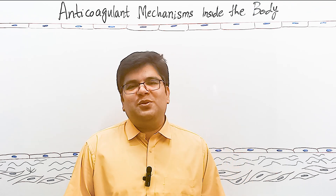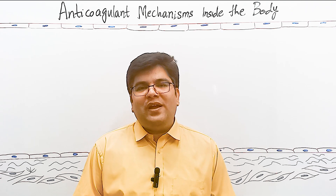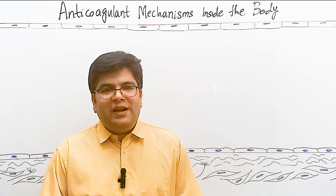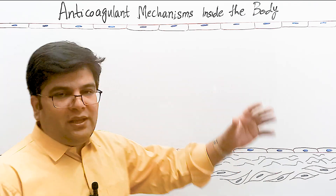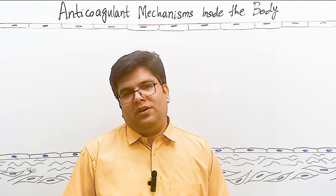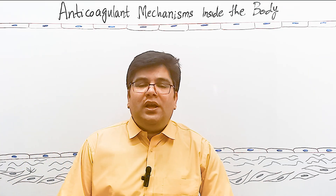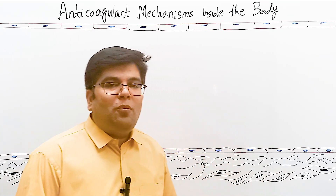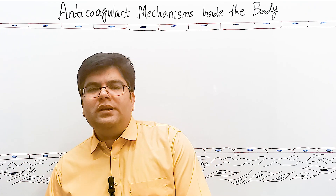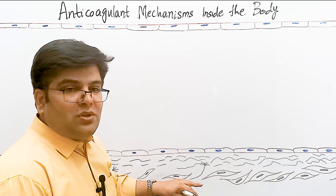Assalamu alaikum dear students, welcome to Dr. Romy lectures. In our previous sessions we have studied how blood clots when there is injury to a vessel wall. Have you ever wondered why blood flowing normally in an uninjured blood vessel does not clot? Today's topic is the anticoagulant mechanisms present inside the body. There are two types of factors: physical and chemical, which prevent the clotting process in a normal blood vessel.